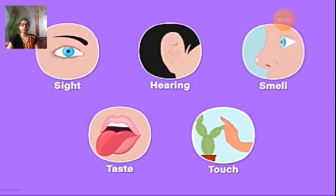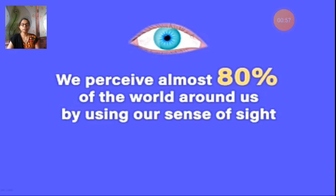Eyes help us to see things, ears help us to hear sounds, we smell with our nose, taste with our tongue, and the sense of touch is provided by our skin. Of course, all senses are important, but the sense of sight is the most important. Here is an interesting fact: we perceive almost 80% of the world around us by using our sense of sight.